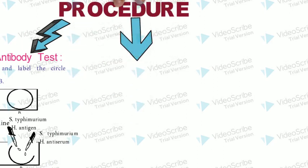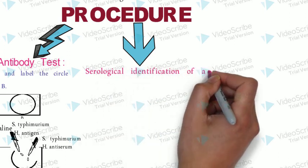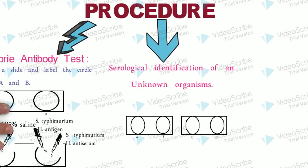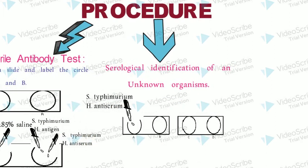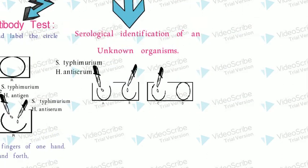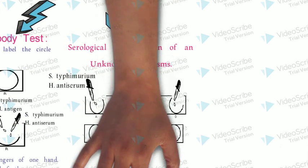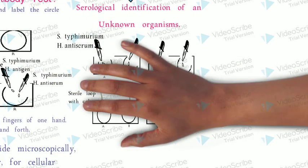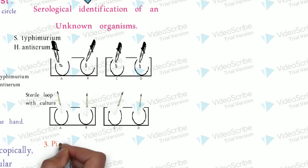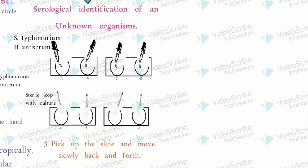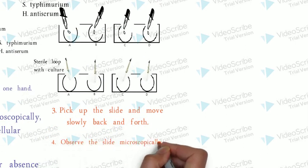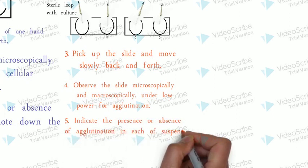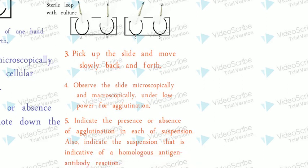Procedure Part 2 — Serological identification of an unknown organism. Prepare two slides and label the areas A, B, C, D. Into each area on both slides, place one drop of Salmonella typhimurium H antiserum. With a sterile inoculating loop, suspend a loopful of each number-coded unknown culture in the drop of antiserum in its appropriately labeled area. Pick up the slide and move slowly back and forth. Observe the slides microscopically under low power for agglutination. Indicate the presence or absence of agglutination in each suspension, and also indicate which suspension shows a homologous antigen-antibody reaction.